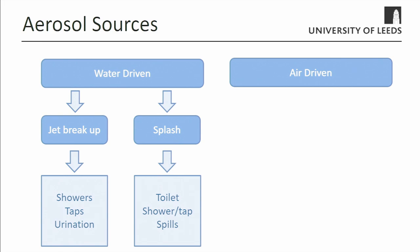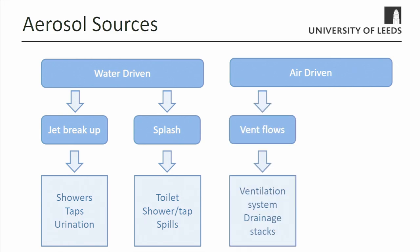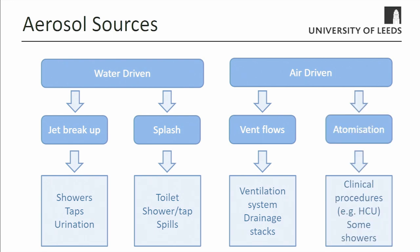Then there are aerosol sources driven by air: ventilation flows, where the ventilation system in a building can potentially release and drive particles through an aerosol. Also drainage systems in buildings — the biggest risk with those is when air flows through them instead of water, and that's what drives an aerosol from them. There are also places where you get atomization: certain clinical procedures, low-flow showers — in Texas you may actually be atomizing the water in those. These are the environmental sources, and on top of those you've got human sources from coughing and similar things.